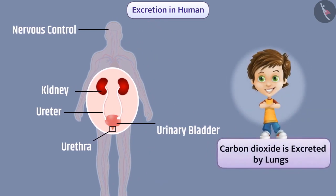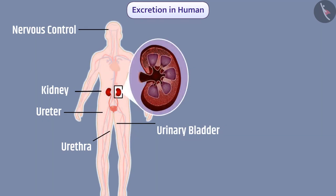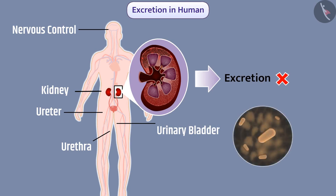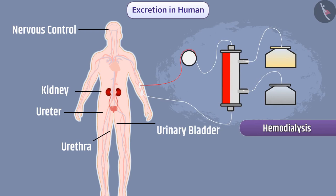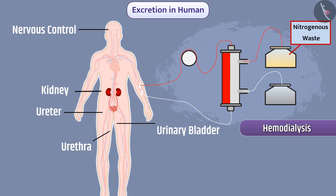Apart from this, carbon dioxide is excreted by the lungs, and the skin excretes water and salts. If for any reason the kidneys stop working, the excretion process does not happen properly, and harmful waste starts accumulating in the body, increasing the chance of death. In such cases, hemodialysis is used, in which the blood is filtered with the help of machines and nitrogenous waste are removed from the body. That is why dialysis is called an artificial kidney.